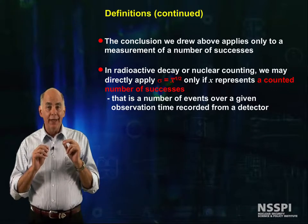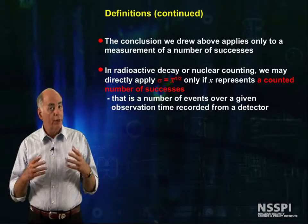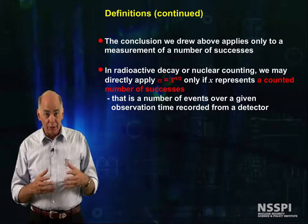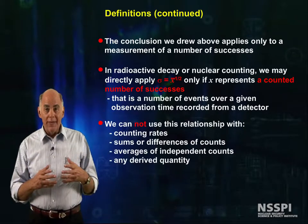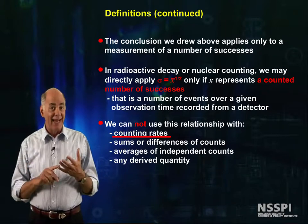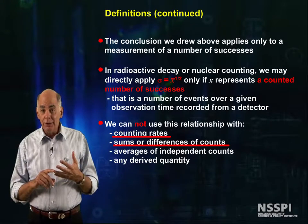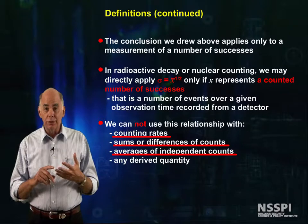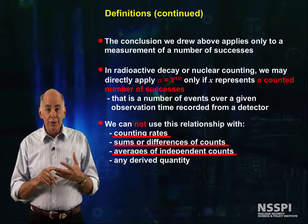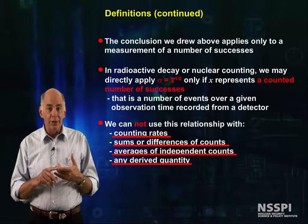That is, a number of events over a given observation time recorded from the detector. We cannot use this relationship with count rates, sums or differences of counts, averages of independent counts, or any derived quantity.